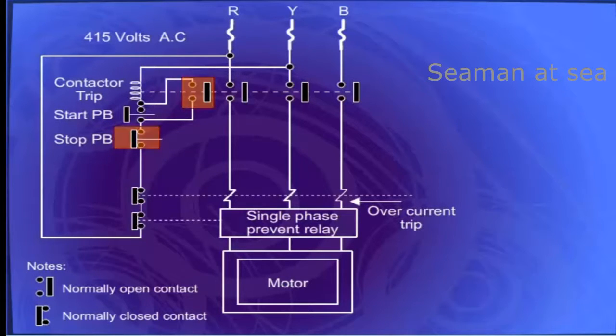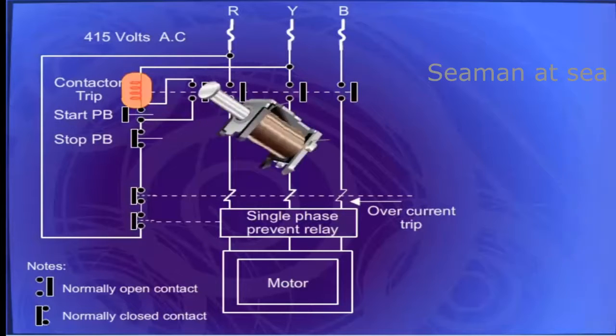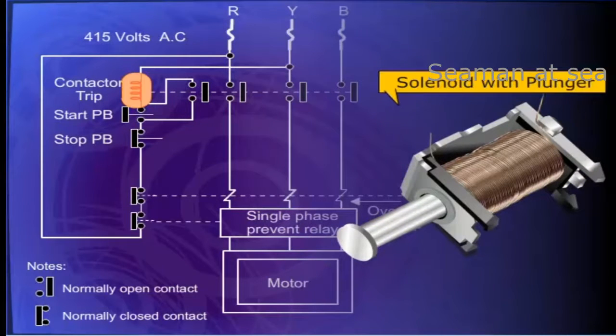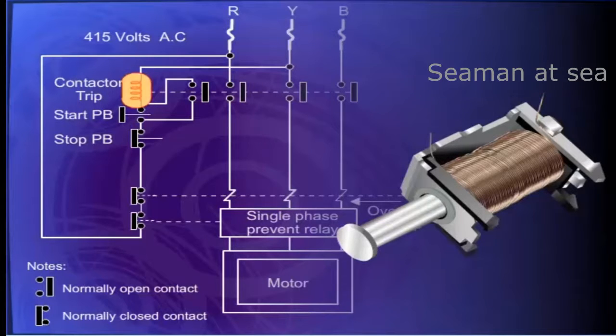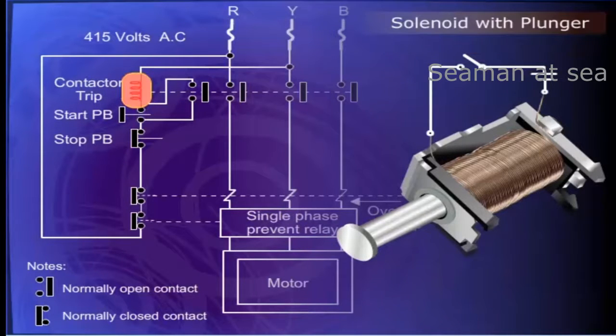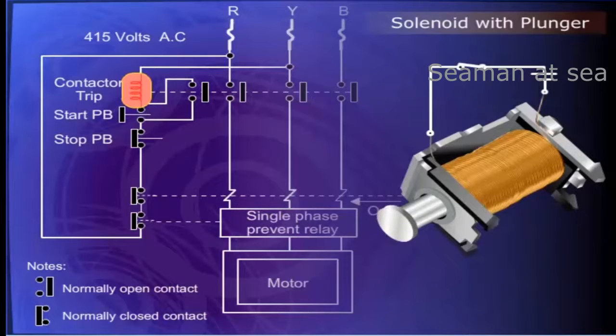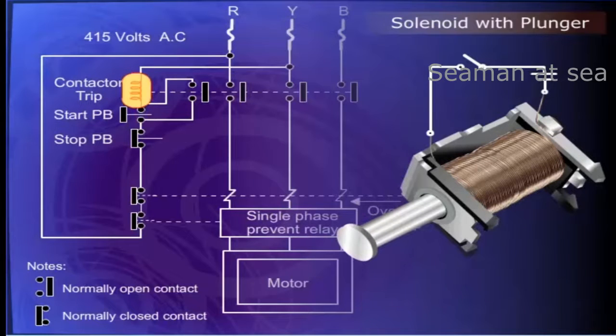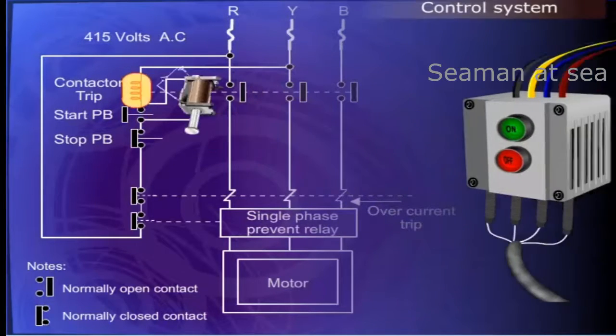Electrical contactor has a solenoid with plunger which moves a set of electrical contacts from closed position to open position or vice versa. The plunger picks up when there is energization of the electromagnetic coil. When the coil is de-energized, the plunger returns to its original position due to spring action.